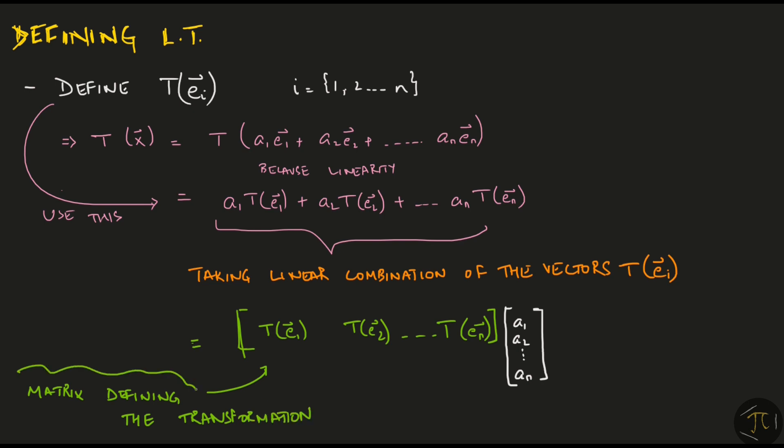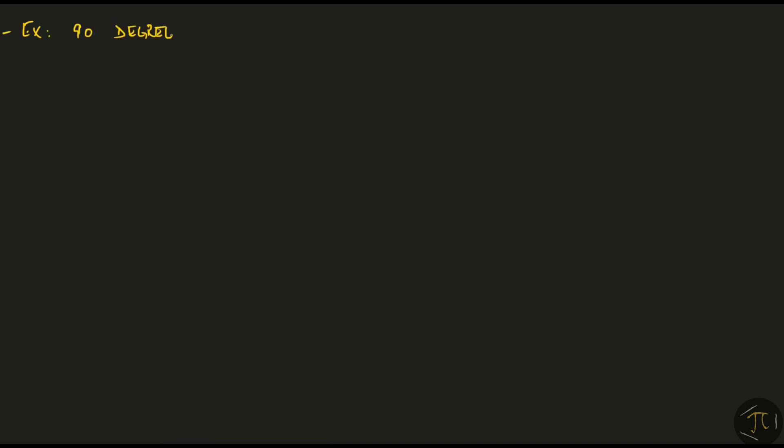The matrix that does the same work as the transformation is just the matrix whose columns are the transformations of the basis vectors. Let me show you how this works for a 90 degree rotation transformation given by this function. Our job is to find the elements of this matrix A which would take the same vector xy to minus yx.